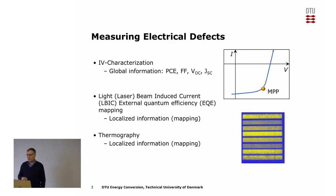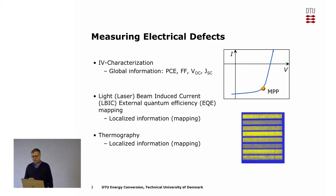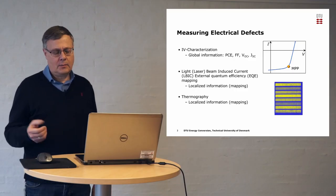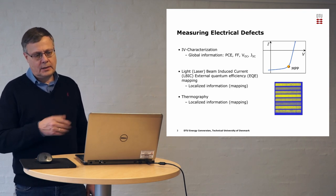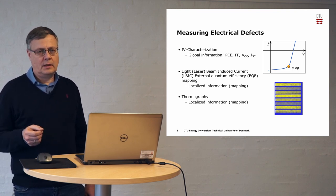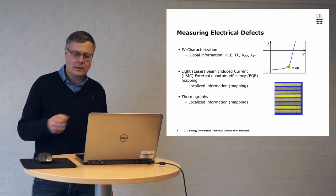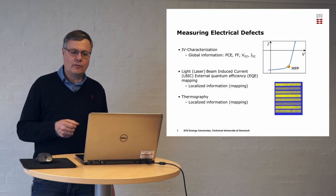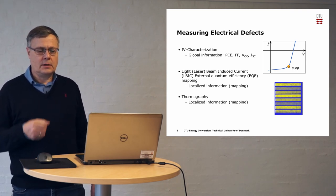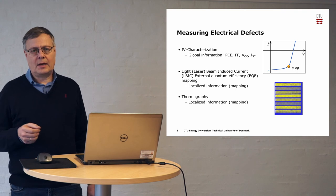The way that we characterize solar cells normally is by doing an IV measurement. We measure the current output of the solar cell while we step through a voltage range, and we get a curve like the one shown here. From this curve we can estimate the efficiency of the solar cell, the highest voltage and the highest current. If there are electrical defects in the solar cells, this will be manifested in the form of this curve. But it is only global information — it does not tell us where in the solar cells the defects are. For this we need some kind of mapping technique.